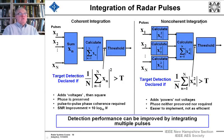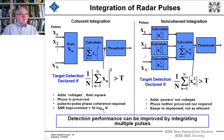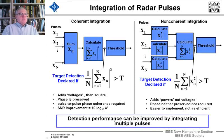For non-coherent integration, we square the pulses first, then take the sum of those squares and threshold. Phase is preserved only for coherent integration, which requires pulse-to-pulse phase coherence in the transmitter. The signal-to-noise improvement for coherent integration is 10 times log base 10 of the number of pulses integrated. For non-coherent integration, we're adding powers not voltages; phase is neither preserved nor required. It's easier to implement but not as efficient — there will be a non-coherent integration loss — though detection performance can be improved by integrating more pulses.